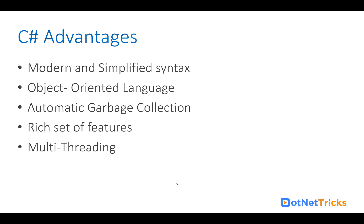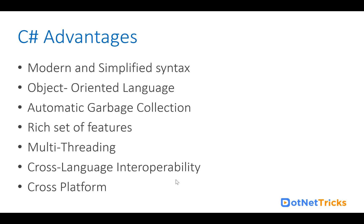C# supports multithreading, so wherever there is a requirement to implement multithreading, we can easily do so with C#. It also supports cross-language interoperability — within the .NET framework we can run other languages like VB.NET and Python, and C# code can communicate with them. C# is also cross-platform, so C# code can run on Windows, Mac, Linux, and Ubuntu. We can even develop mobile apps using Xamarin with C# for cross-platform iOS and Android applications.